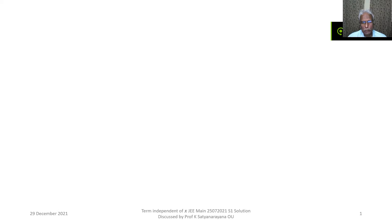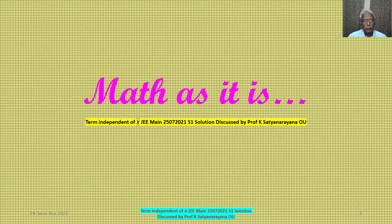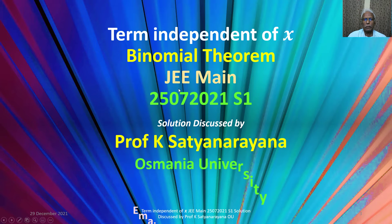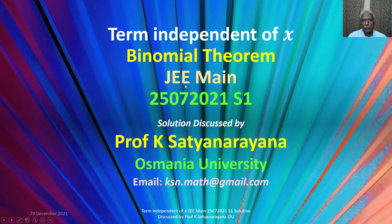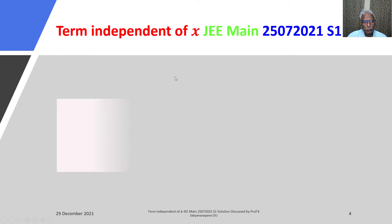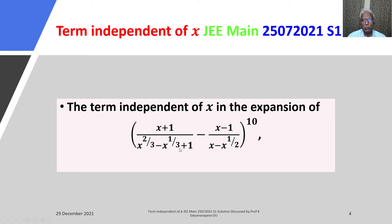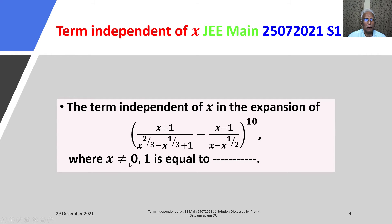We will now discuss the solution of a problem from the section Binomial Theorem. The problem is on the term independent of x. This problem appeared in JEE Main exam held on 25th July 2021 in Shift 1. The problem is: find the term independent of x in the expansion of (x + 1/x)^(2/3) minus x^(1/3) plus 1 minus (x minus 1) / (x minus x^(1/2)), whole to the power of 10, where x ≠ 0, x ≠ 1.